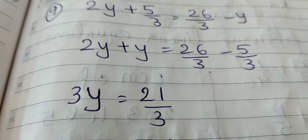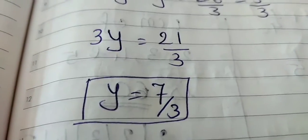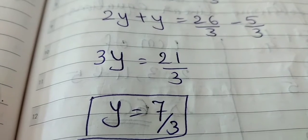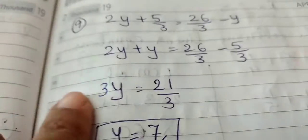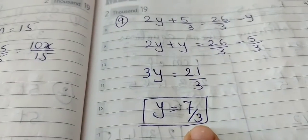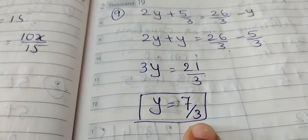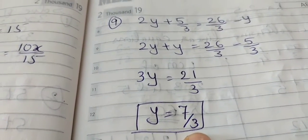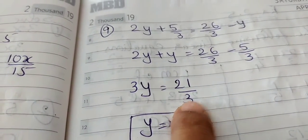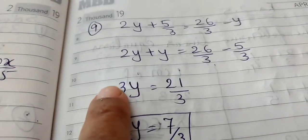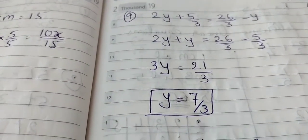So you can see 2y plus y is equal to 3y and 26 minus 5 gives you 21 and the denominator 3 is already there upon 3. So next step, here you can see 21 divided by 3 gives you 7. And this 3 when it comes in the denominator place, the answer will be 7 upon 3. Here I have already divided 21 by 3 which gives me 7, and then this 3 comes in the denominator place. So you have 7 by 3, y is equal to 7 by 3.